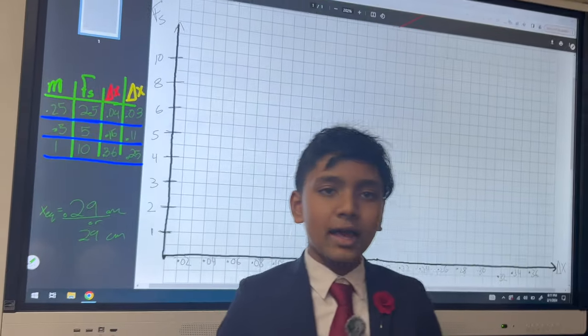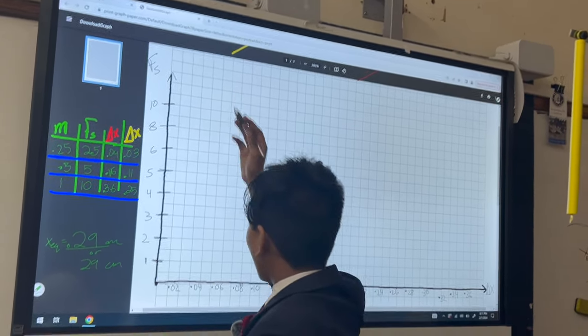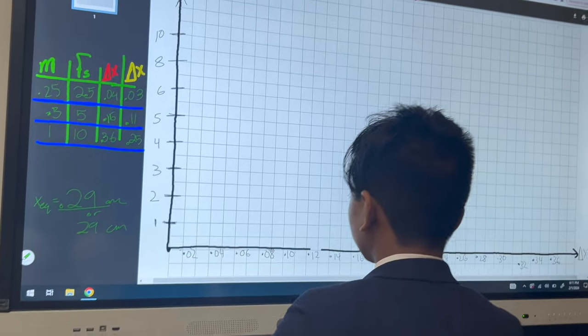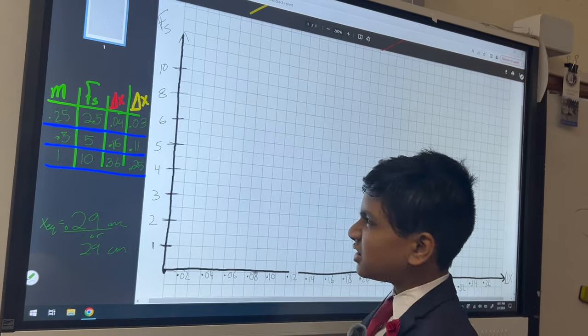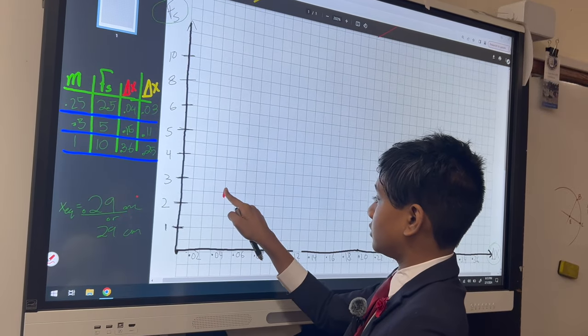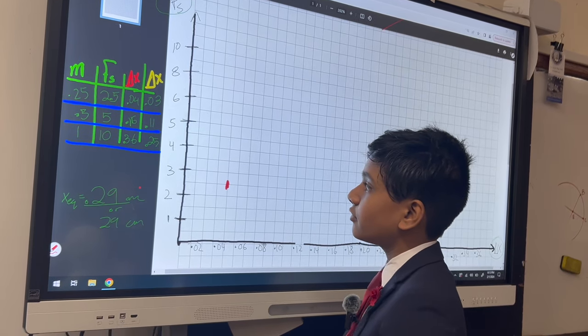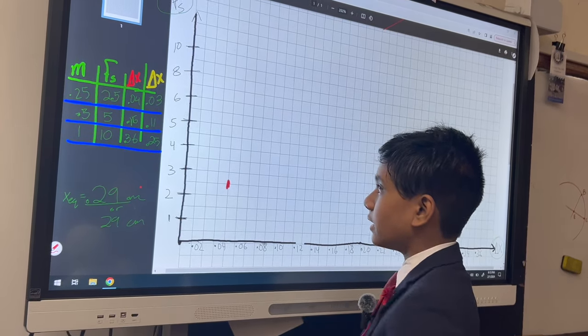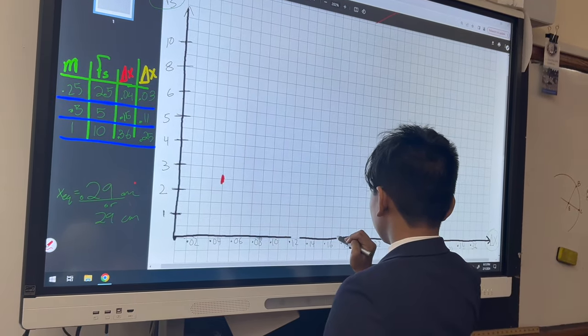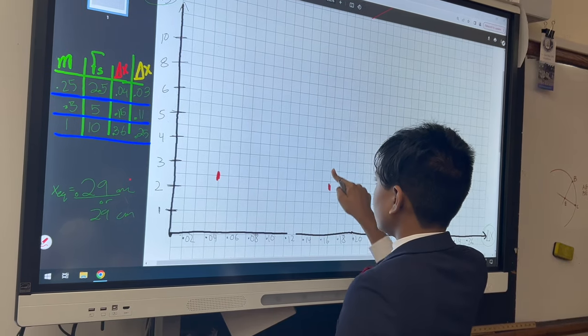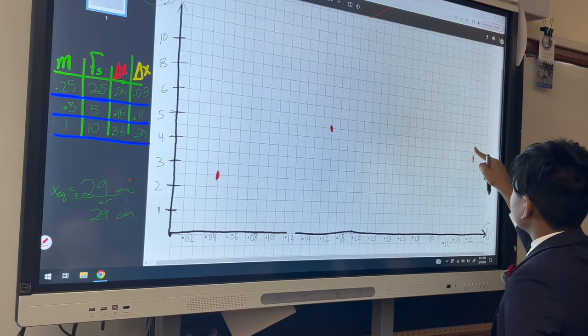There. So now let's draw a graph with what we've learned. So here we have Fs, the force of the spring, and here we have the displacement. So this should be approximately a straight line, and 2.5 right there. Now we have 5, and delta x is 0.16, so it's right here. And Fs is 10, we have 0.36.